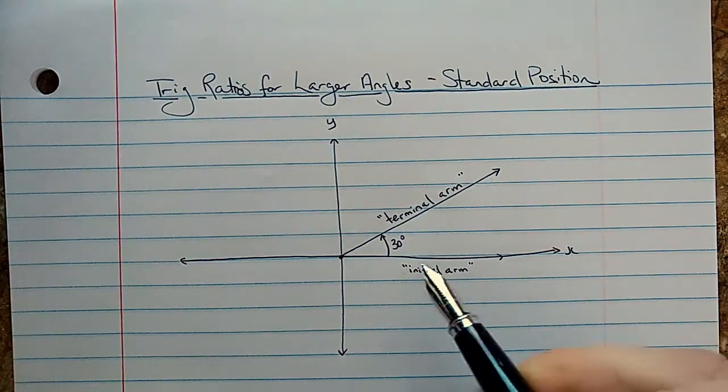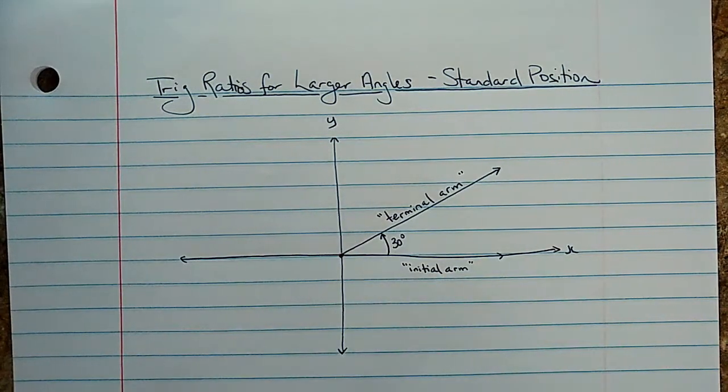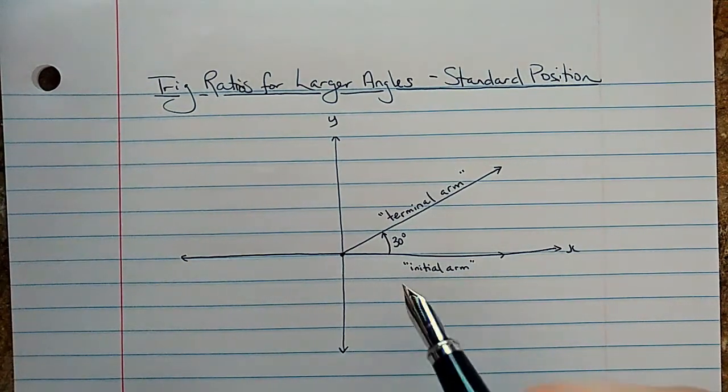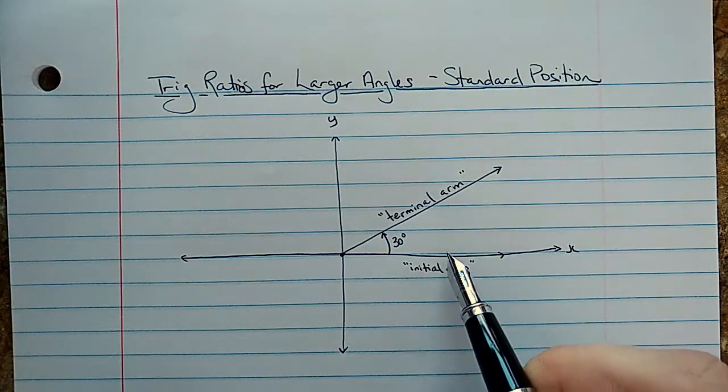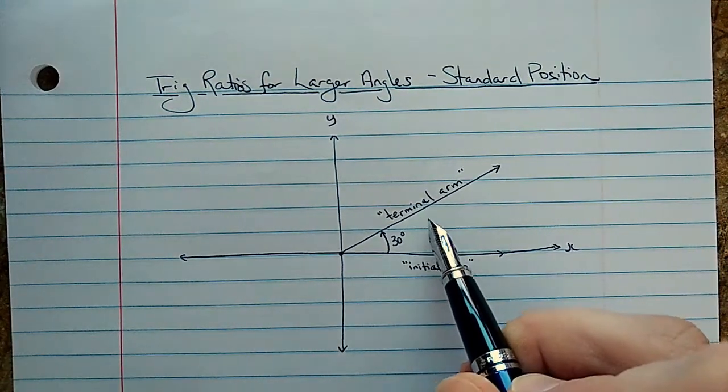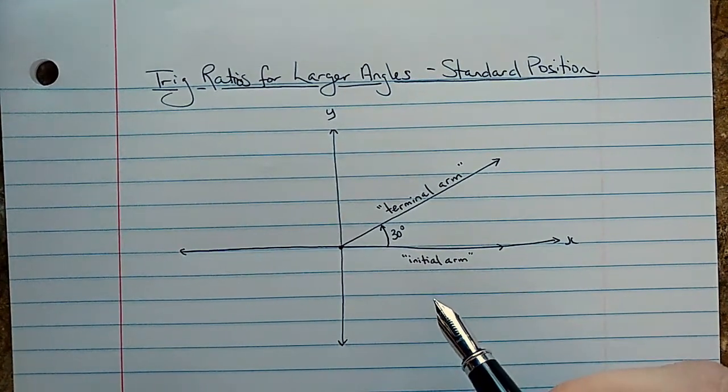Now there's only one way to draw this angle, 30 degrees, just like this. If it was somewhere else on here, it wouldn't be in standard position. So we always measure from the positive x-axis and we go in this direction here, which is counter clockwise. So that's how we do it for positive angles.